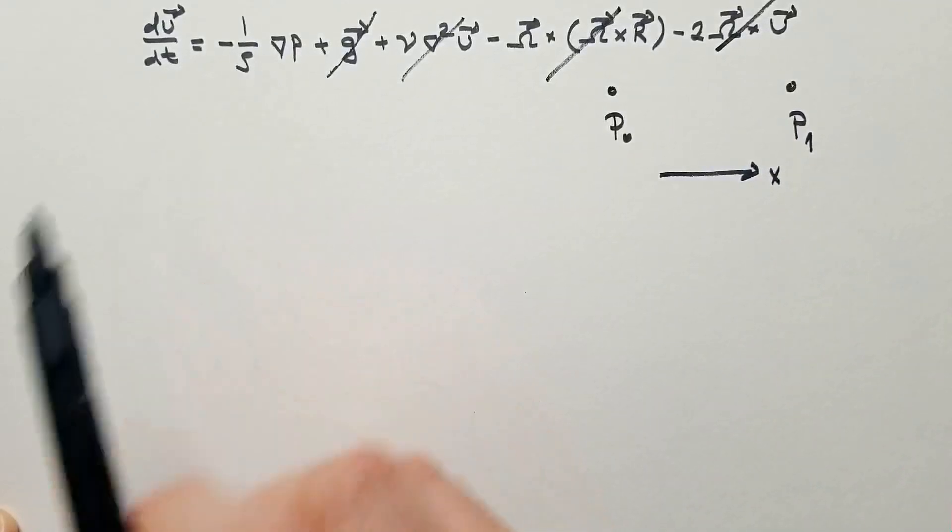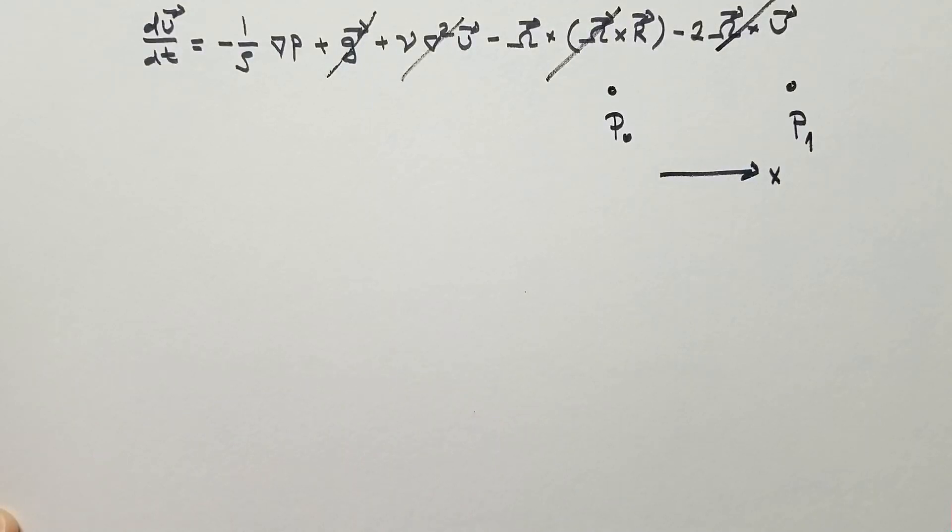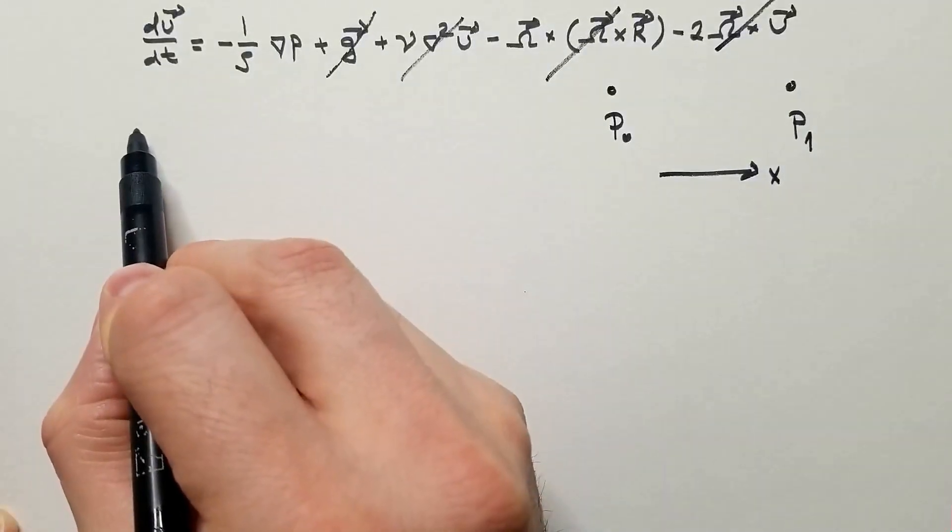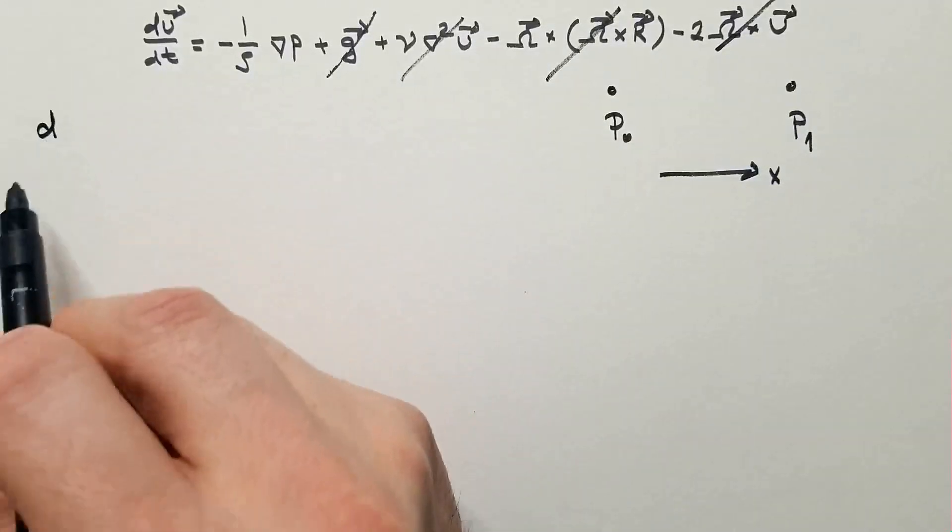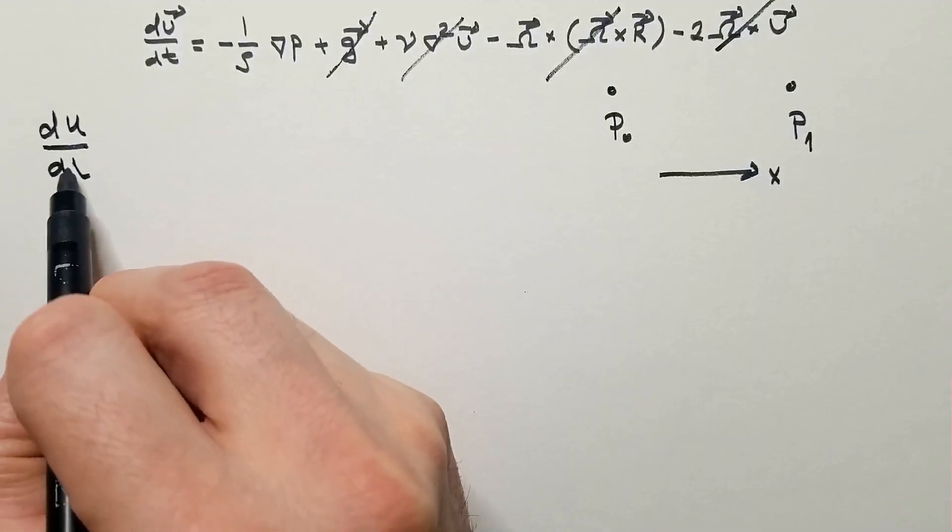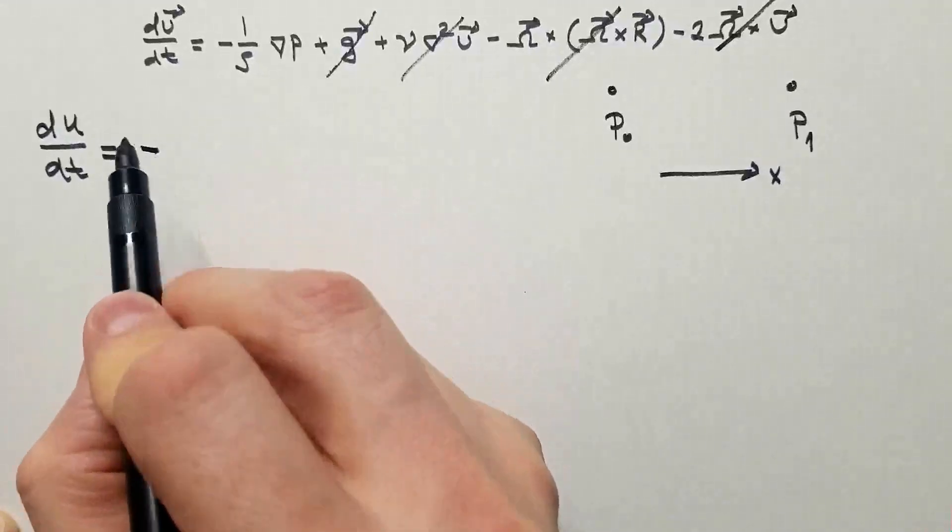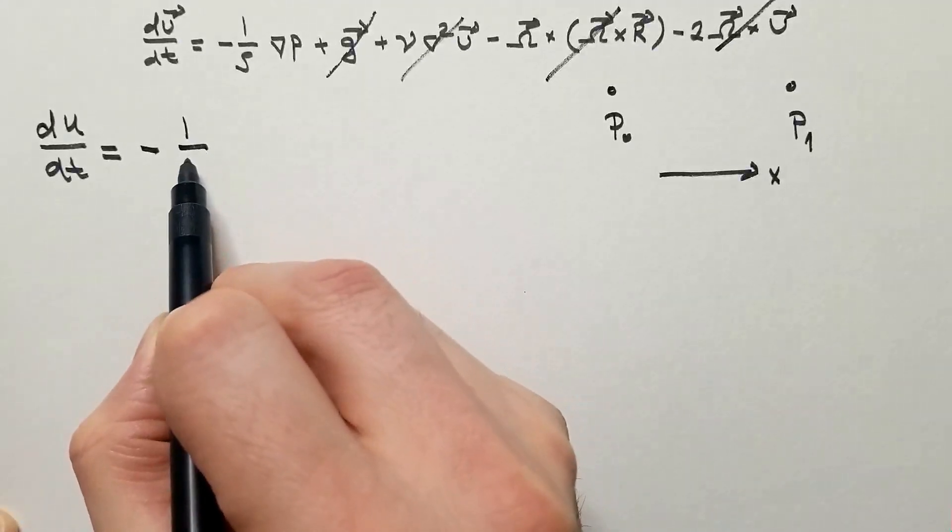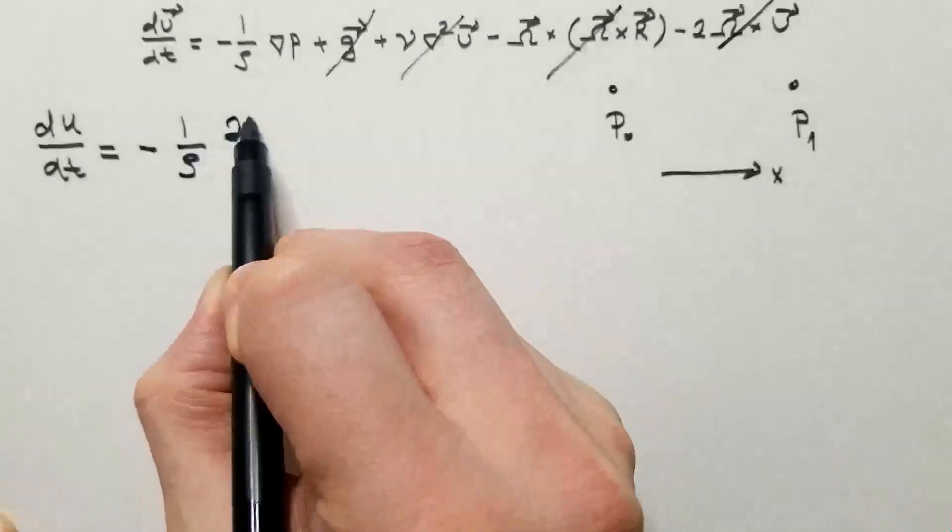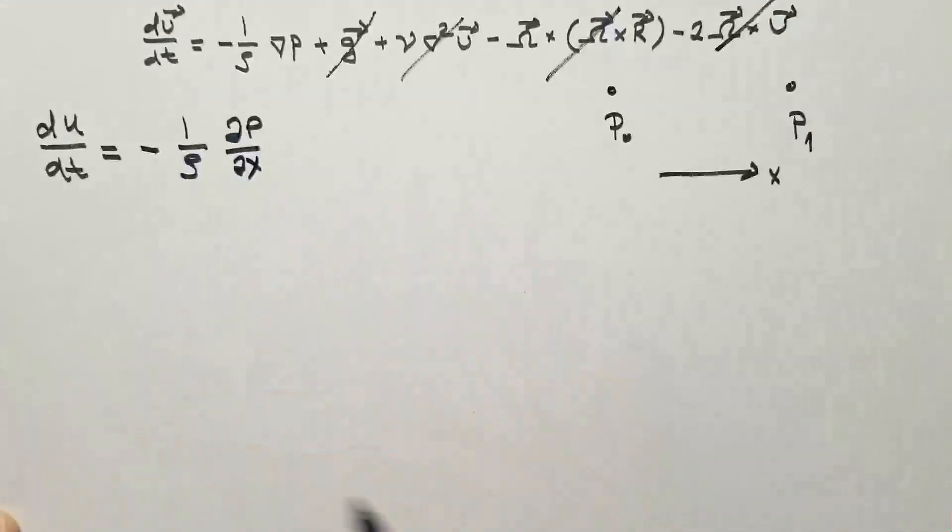So my Navier-Stokes equation reduces to du/dt equals to minus 1 over rho, delta P, delta x. How do I solve this equation?